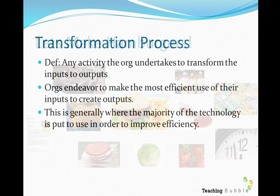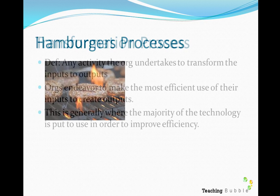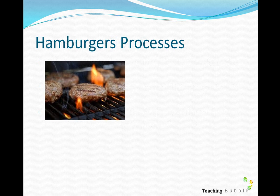Once we have those inputs, they need to be transformed into an output. Any process that transforms inputs into outputs is called a transformation process. Organizations try to do this as efficiently as possible. Most technology is used here — to reduce wastage, to turn inputs into outputs quickly and efficiently. Any activity an organization undertakes to transform inputs into an output is a transformation process.